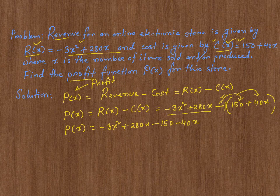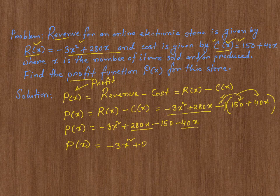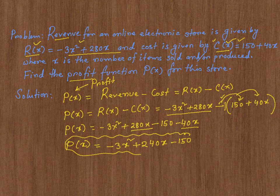Now, if I combine or simplify things, I'm going to get profit function is equal to -3x², 280x - 40x is going to be 240x, then -150. And that's the profit function for the electronic store.